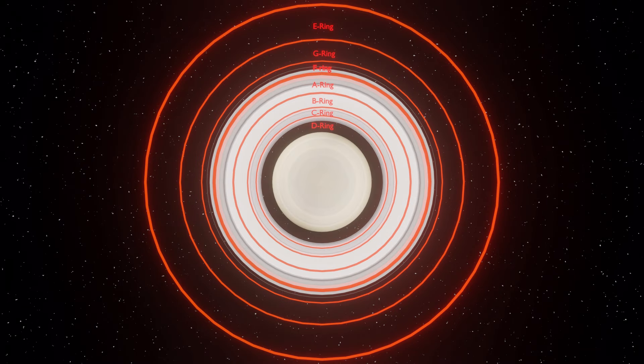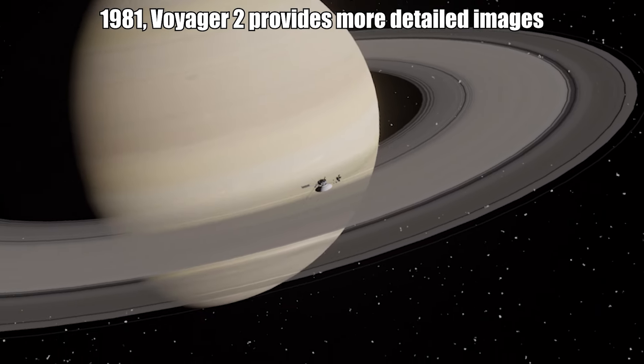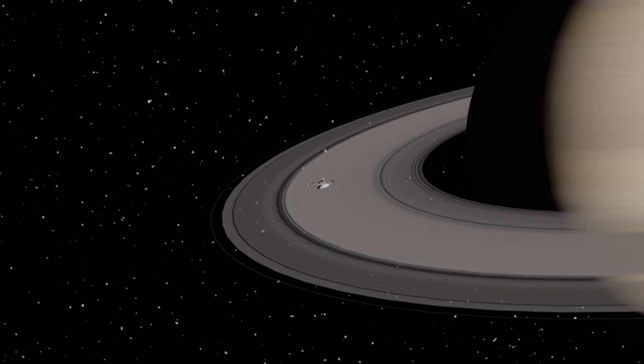Flying even closer to Saturn in 1981, Voyager 2 provided more detailed images and documented the thickness of some of the rings.